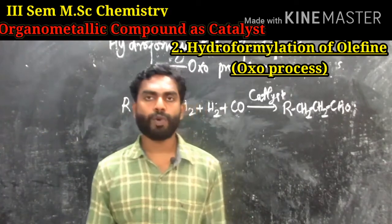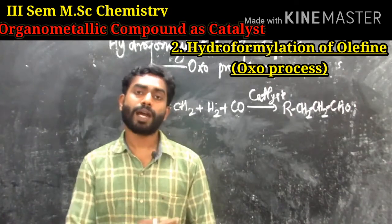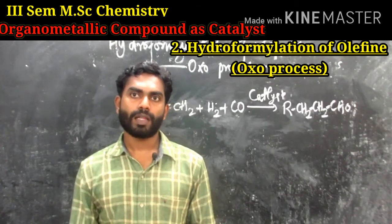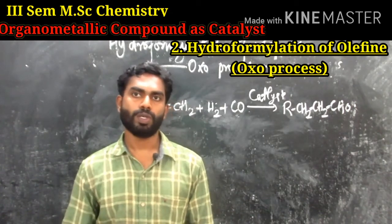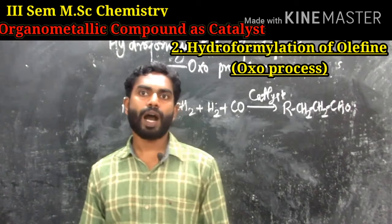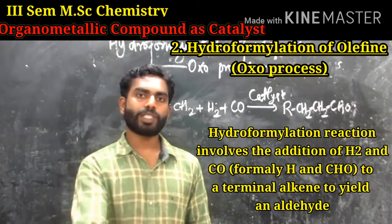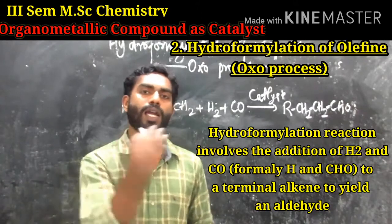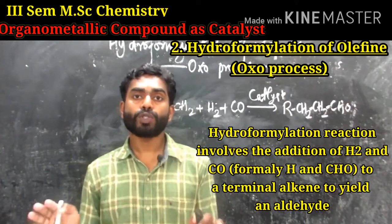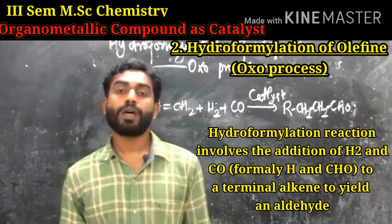The most important example of homogeneous catalysis involving an organometallic compound is the so-called hydroformylation reaction, also called the oxoprocess. It involves the addition of H₂ and CO — formally H and CHO — to a terminal alkene to yield an aldehyde. Since it is used to make oxygen-containing compounds from hydrocarbons, it is also known as the oxoprocess.